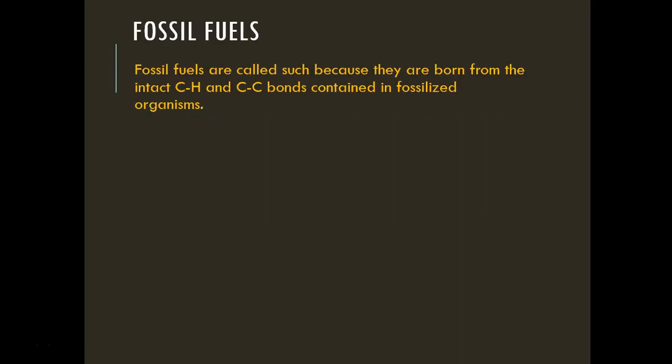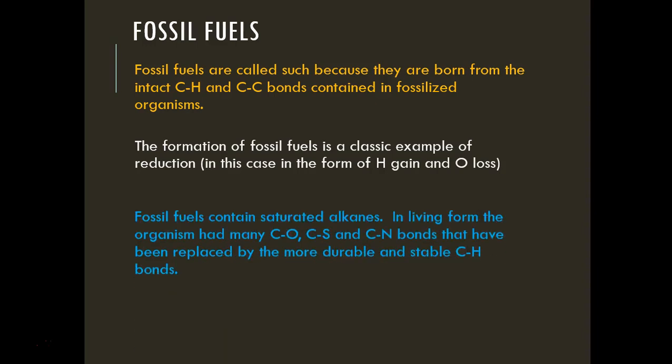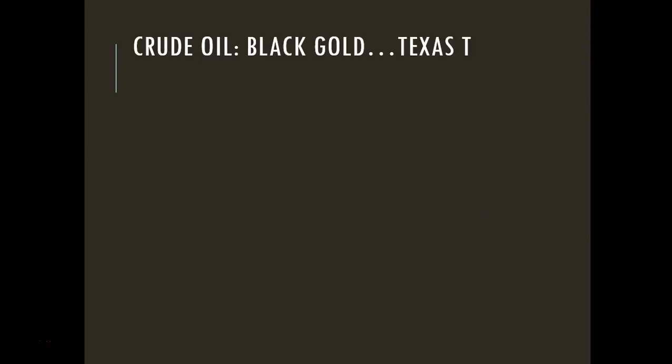Fossil fuels are called fossil fuels because they originate from the carbon, hydrogen, and carbon-carbon bonds in fossilized organisms—this is an example of reduction: gaining hydrogen and losing oxygen. In living organisms before fossilization, there were many carbon-oxygen, carbon-sulfur, and carbon-nitrogen bonds. During fossilization, these were replaced by more durable carbon-hydrogen bonds, which are broken and reformed when the fuel is burned.